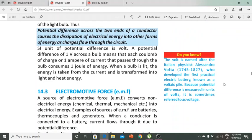The SI unit of potential difference is volt. A potential difference of one volt across a bulb means that each coulomb of charge, or one ampere of current, that passes through the bulb will consume one joule of energy. When a bulb is lit, the energy is taken from the current and transformed into light or heat energy.